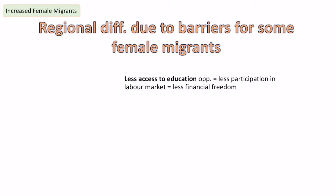Equally, there are barriers that are stopping women from migrating in other areas. In Asia and Africa there are significantly fewer female migrants. In some developing countries there is less access to education opportunities for women, meaning they're less likely to be in the labour market and therefore don't have the financial freedom to afford to migrate.